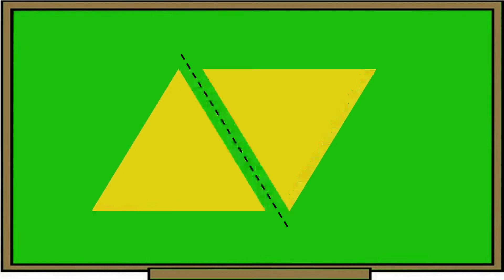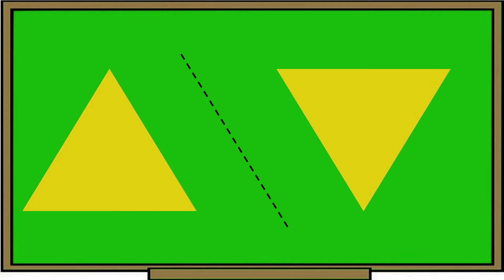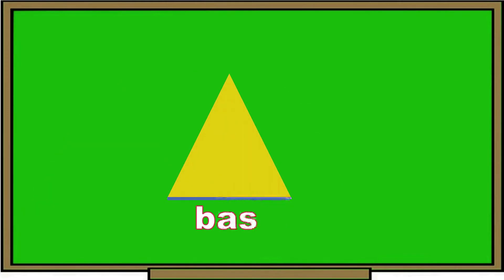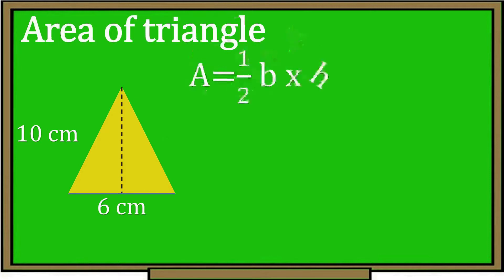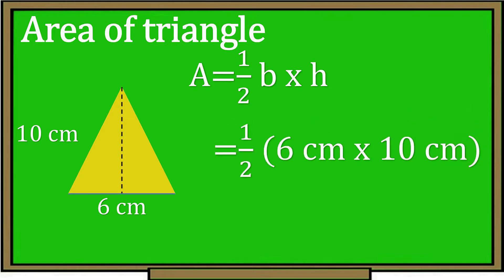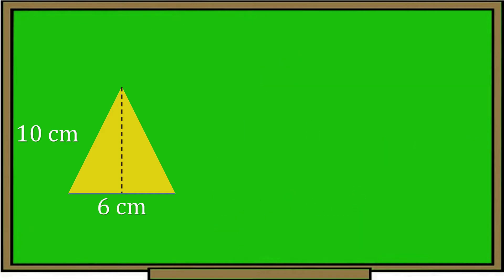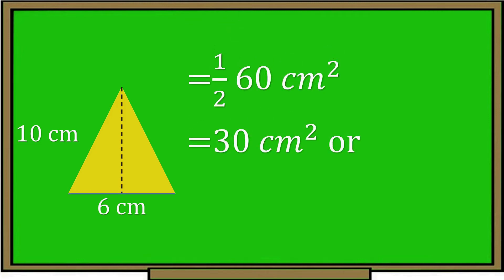If we divide the parallelogram into 2, what is the resulting shape? Correct! It is a triangle. A triangle is one half of a parallelogram. A triangle has a base and a height. Find the area of this triangle with a base of 6 centimeters and a height of 10 centimeters. We use this formula: Area equals one half base times height. Let's substitute the values — one half, base is 6 centimeters and height is 10 centimeters. So let's multiply: one half, 6 times 10 equals 60.